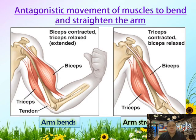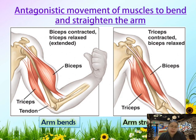Now we're going to look at the antagonistic movement of the muscle to bend and straighten the arm. We have two situations: first is bending, number two is straightening. We have two muscles — one is the bicep, another one is the tricep. This one is the bicep, this one is the tricep. In the center is the tendon, joined with two bones. When bending, the bicep will contract.